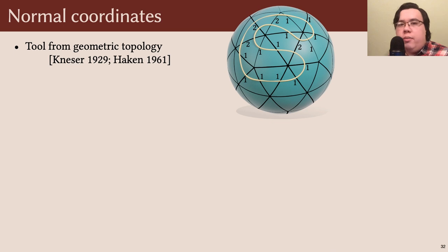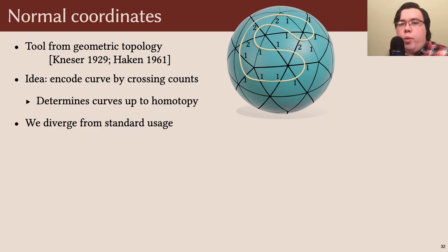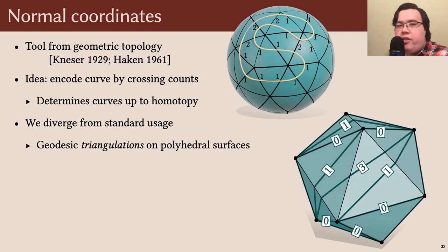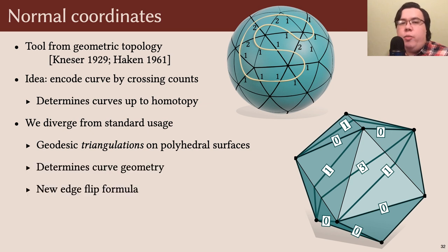Normal coordinates are a well-established tool from geometric topology. The basic idea is that you can encode a curve along a triangulated surface simply by counting how many times it crosses each edge. So long as your curve satisfies a few simple requirements, these counts uniquely determine the curve up to homotopy. We diverge from the standard setting a bit and consider instead geodesic triangulations along polyhedral surfaces. In this case, the normal coordinates actually determine the exact geometry of our curves, and we derive a new formula for performing edge flips in this setting.